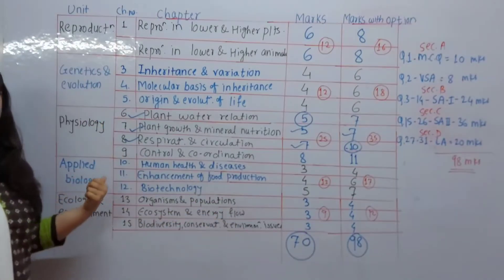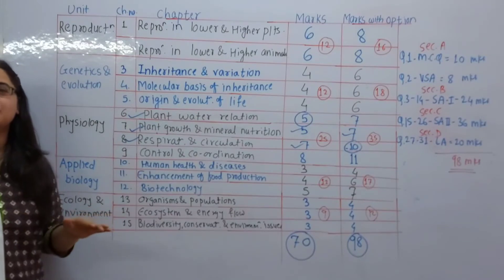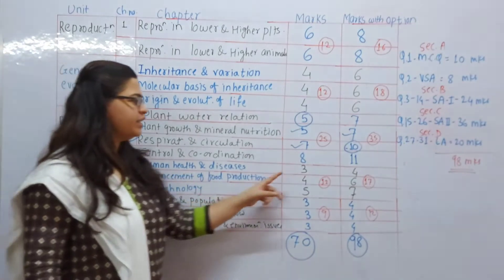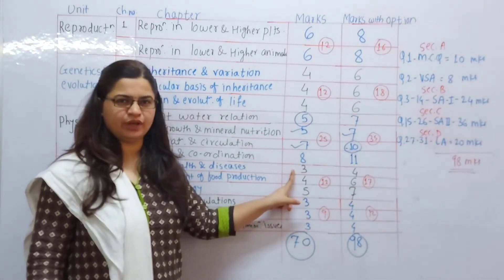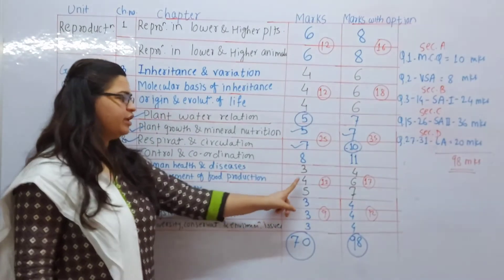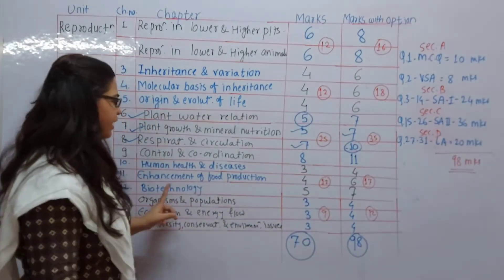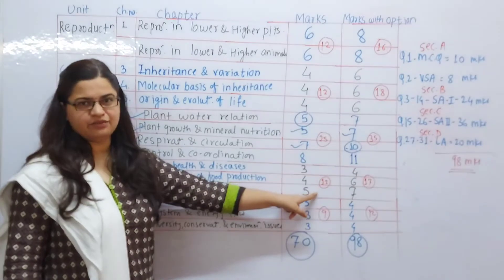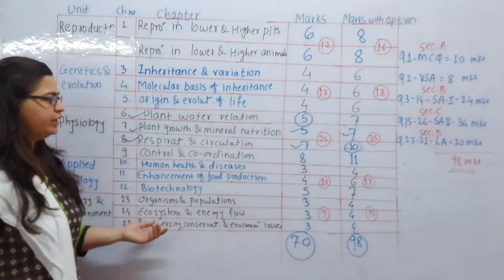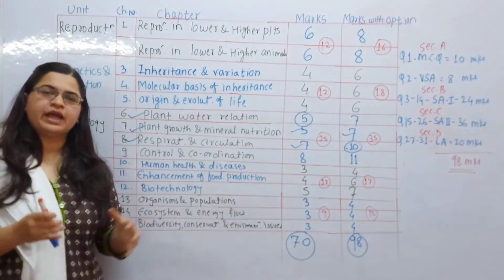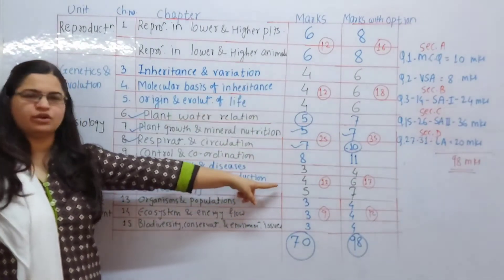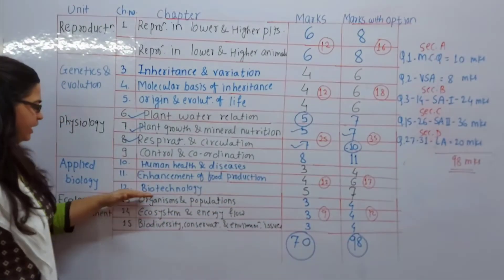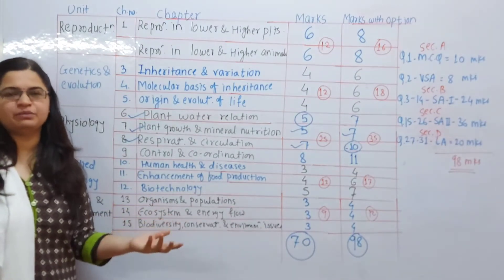The next unit is Applied Biology, which is easy to read. Human Health and Disease is 3 marks without options and 4 with options. Enhancement of Food Production is 4 without and 6 with options. Biotechnology is 5 without and 7 with options. This unit is again 12 marks without options and 17 marks with options. If you add 49 marks from Physiology and 12 marks here, you can earn 61 out of 70 marks.